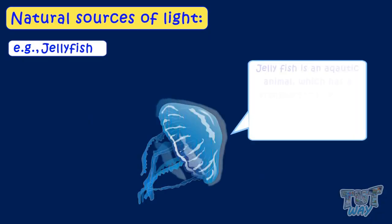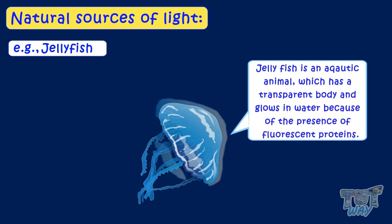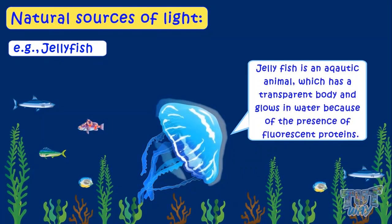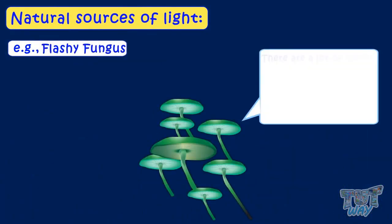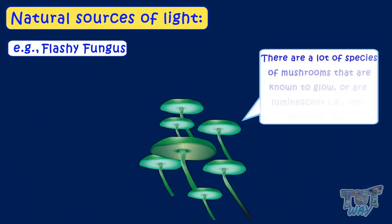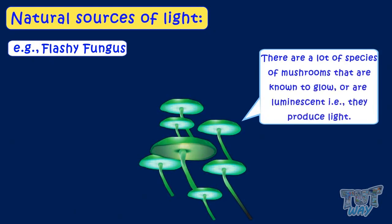Jellyfish is an aquatic animal that has a transparent body and glows in water because of the presence of fluorescent proteins. Flashy fungus — there are a lot of species of mushrooms that are known to glow or are luminescent, that is, they produce light.